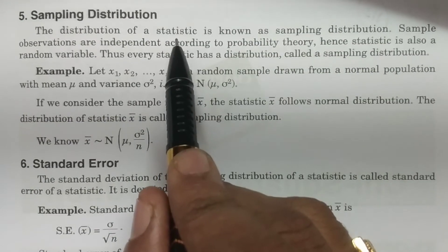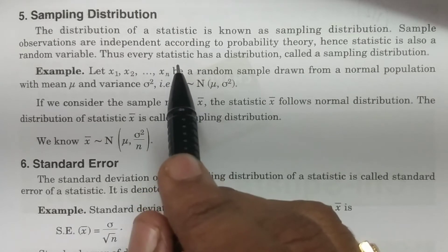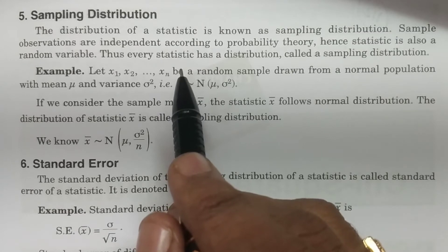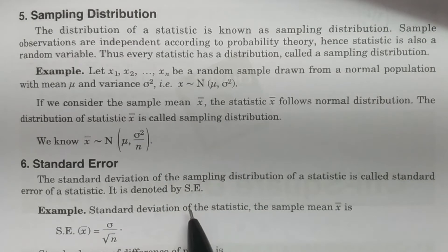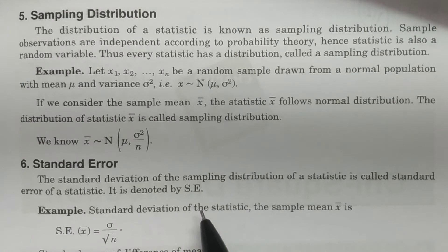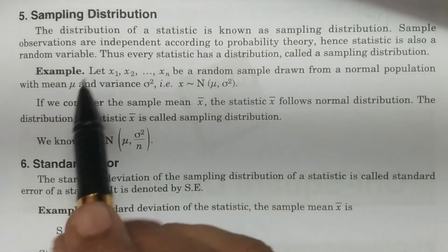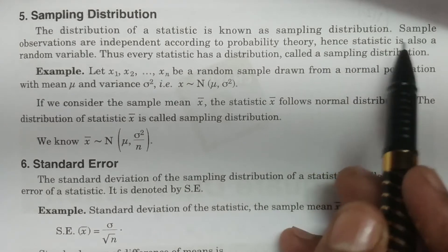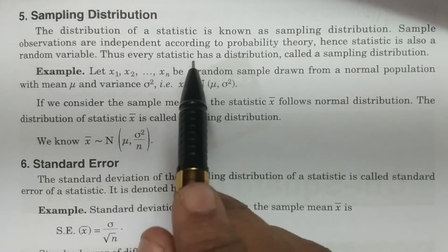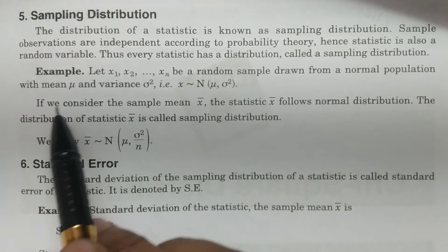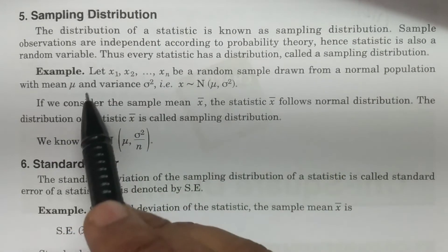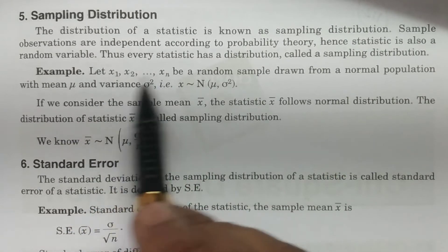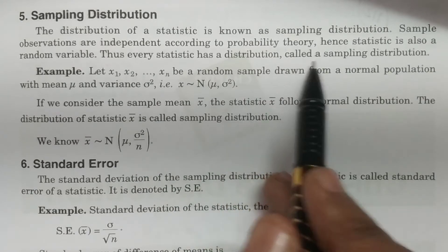Statistics — such as sample mean, sample variance, sample standard deviation, etc. — are examples of statistics (that is the plural, not the subject). The distribution of a statistic is known as sampling distribution. Sample observations are independent according to probability theory, and a statistic is also a random variable, so every statistic has a distribution called sampling distribution.